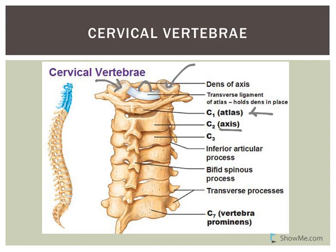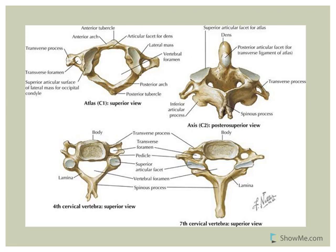All cervical vertebrae have transverse foramina — you can see these openings here. If you see transverse foramina, it's automatically a cervical vertebra because none of the others have that. The transverse foramina are where the vertebral arteries run. All vertebrae also have a vertebral foramen — that's where the spinal cord runs. Remember, foramen means opening.